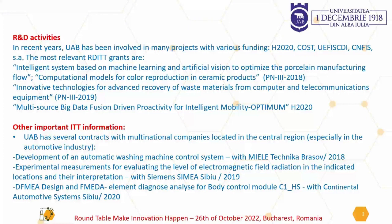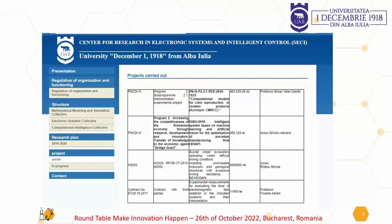I want to make some advertising about our two centers. We have two certified, two accredited centers. One is a Center for Research in Electronic Systems and Intelligent Control. You can see some research grants in the framework of the national scientific plan and also with financial support from Brussels, from the European Commission.